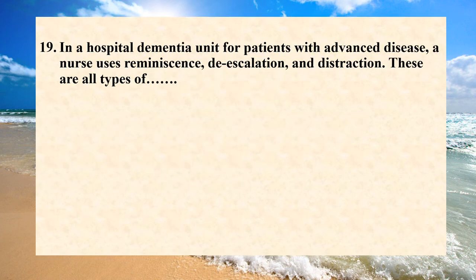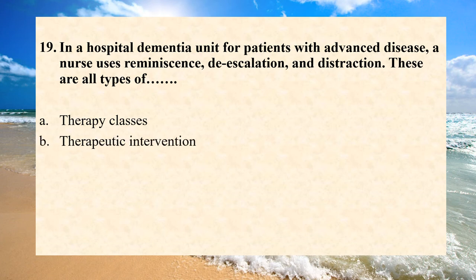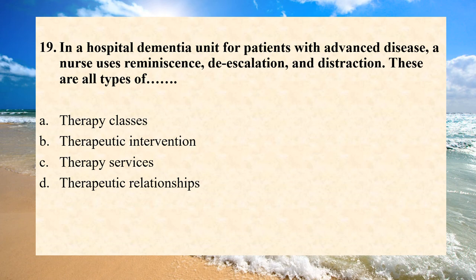In a hospital dementia unit for patients with advanced disease, a nurse uses reminiscence, reality orientation, and distraction. These are all types of: A. Therapy classes. B. Therapeutic intervention. C. Therapy services. D. Therapeutic relationship. Answer is B. Therapeutic intervention.